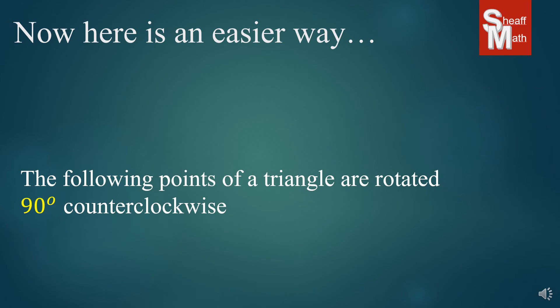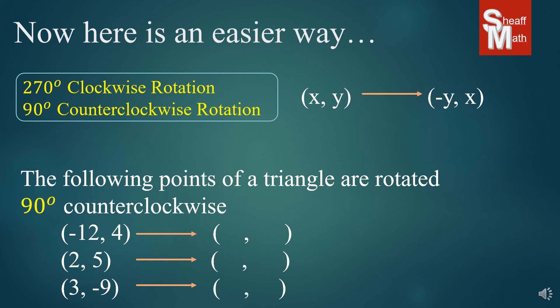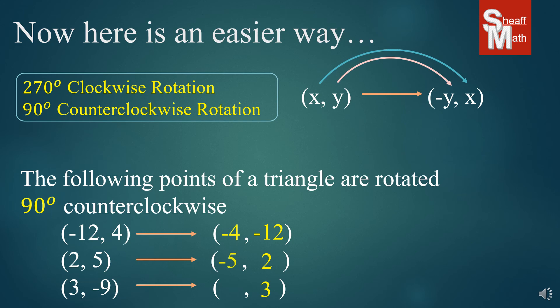Now this one is a typical problem you're going to get. The following points of a triangle are rotated 90 degrees counterclockwise, and you're given the three points of the triangle. We get our rule for 90 degrees counterclockwise, which is the same as 270 degrees clockwise. The x values go to the second position — negative 12, 2, and 3. The y's go to the first position and turn opposite — so we get negative 4, negative 5, and positive 9. Make sure this is done on paper so you don't make any mistakes.